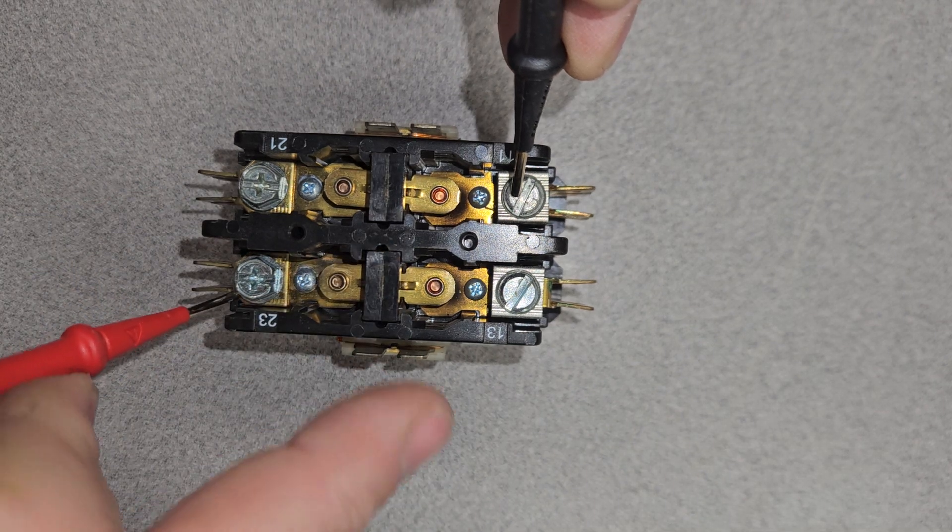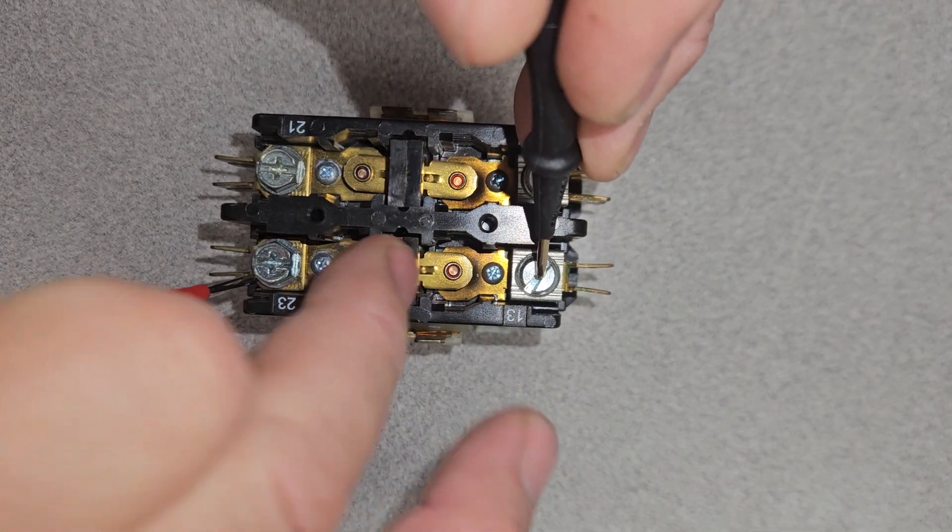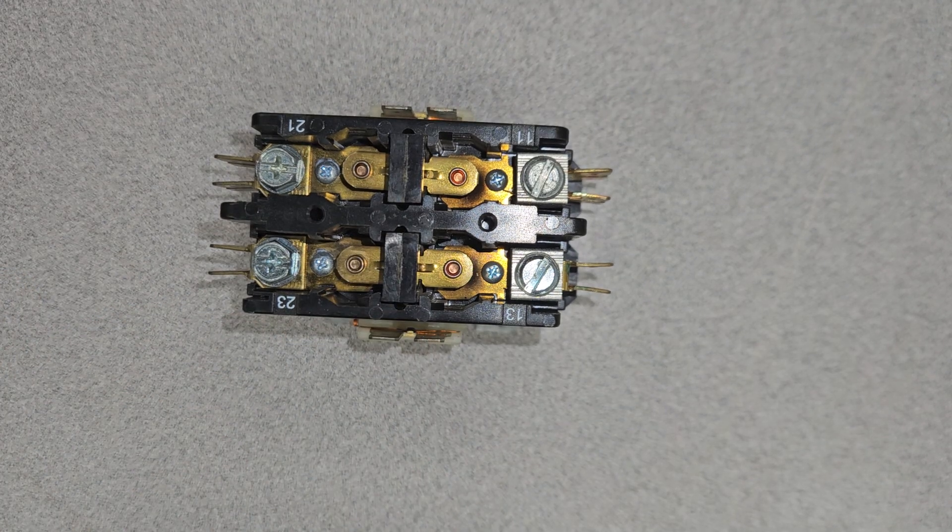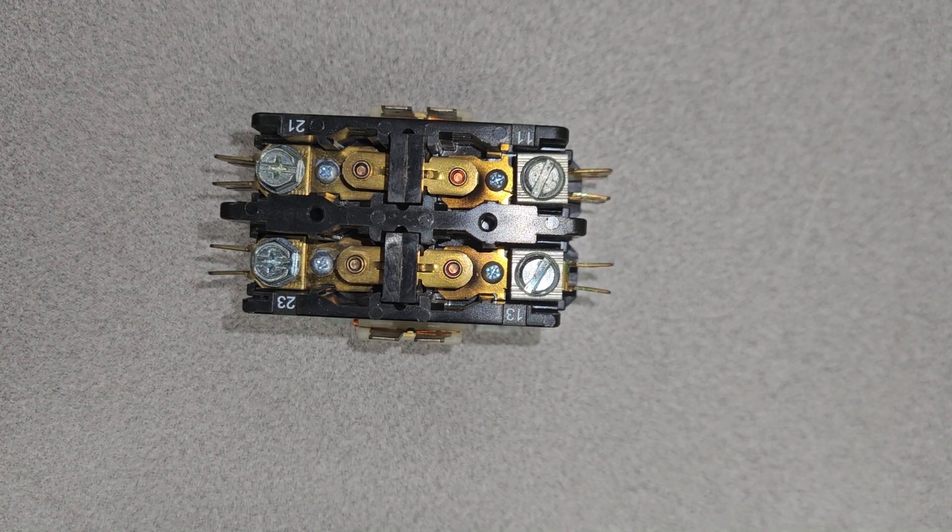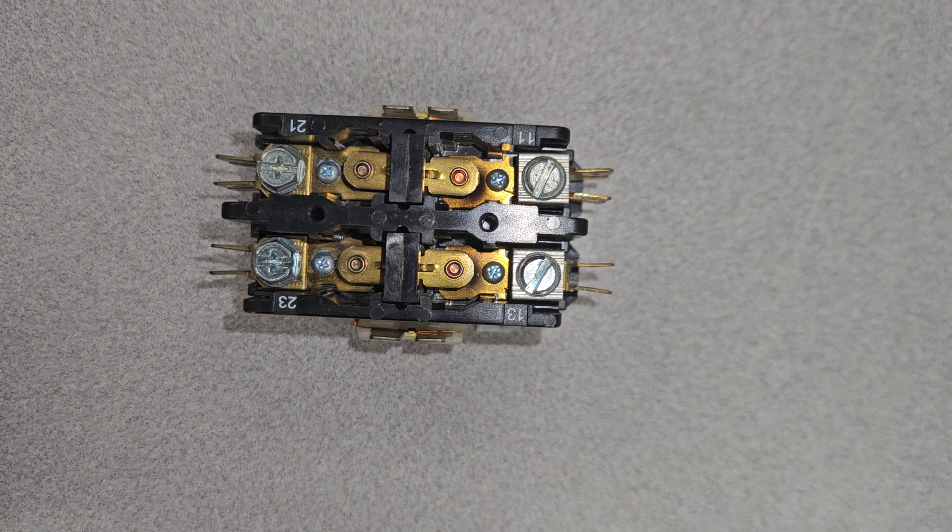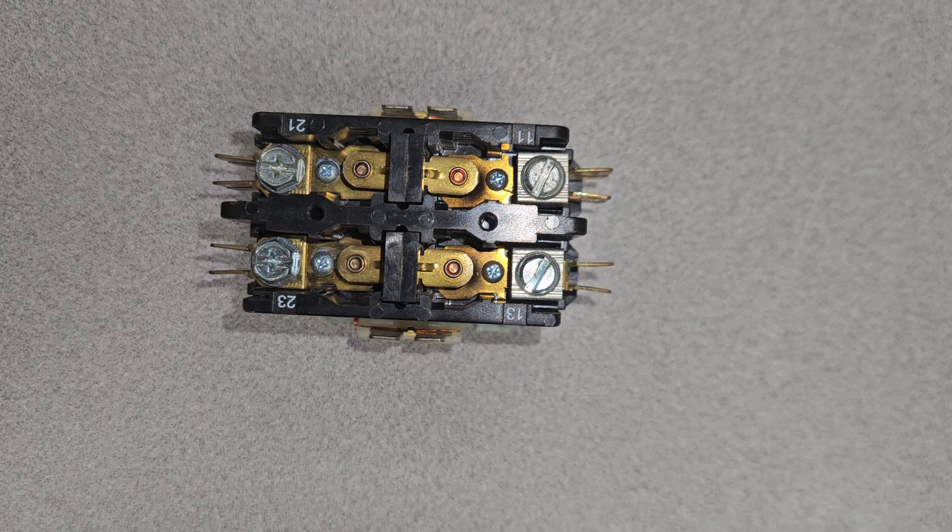That side seems to be okay - electricity will pass through it. This side seems to be okay as well. That is how you check a contactor for continuity through the coil and the contacts of the contactor.